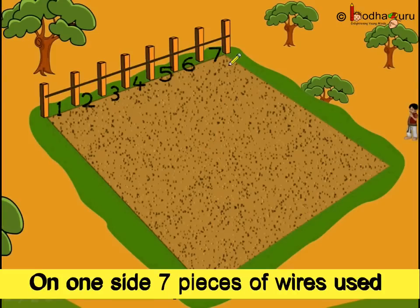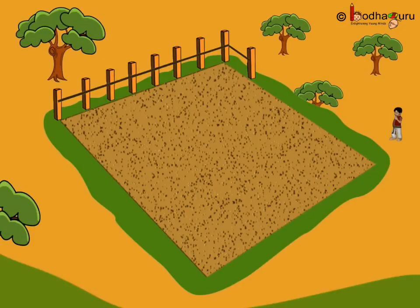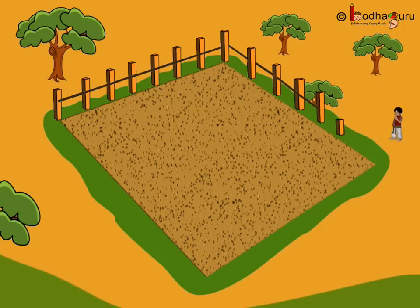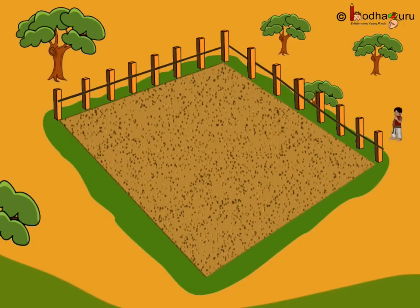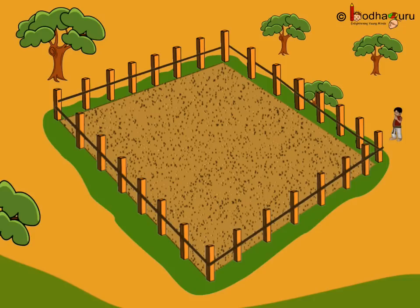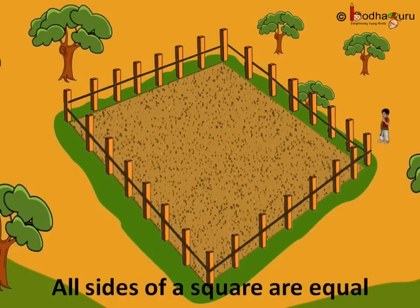Then he did the same for the next side. Here too he used 1, 2, 3, 4, 5, 6, 7 pieces of wire. Again this side he used 7 pieces and again 7 pieces. So in all he used 7 plus 7 plus 7 plus 7 pieces of wire, which is equal to 28 pieces of wire.